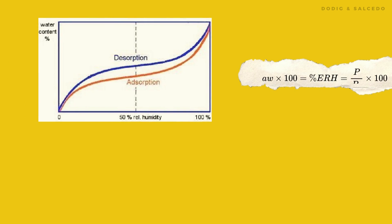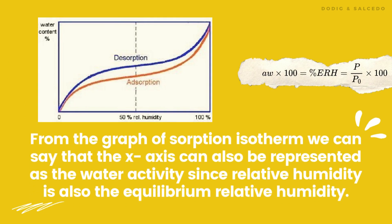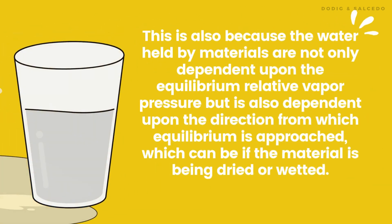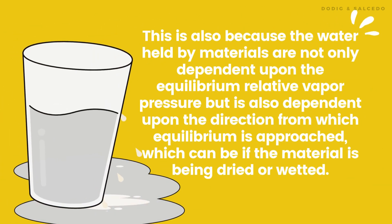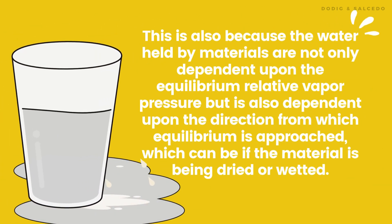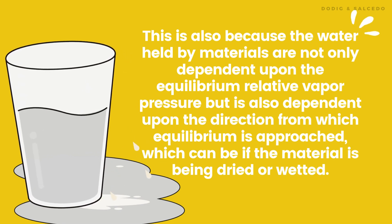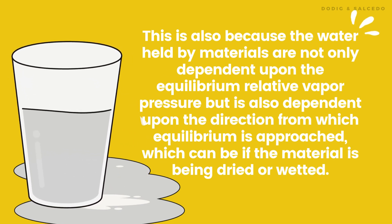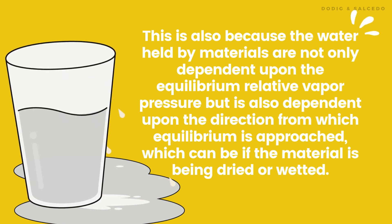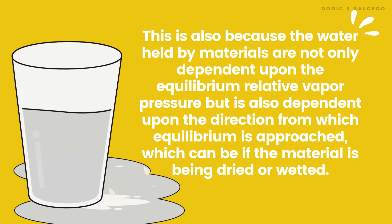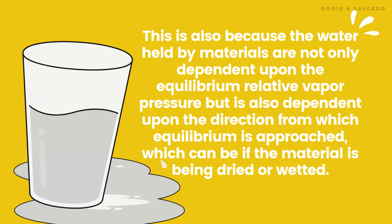From the graph of the sorption isotherm, we can say that the x-axis can also be represented as water activity, since relative humidity is also the equilibrium relative humidity. This is also because the water held by materials is not only dependent upon the equilibrium relative vapor pressure, but is also dependent upon the direction from which equilibrium is approached, which can be whether the material is being dried or wetted.